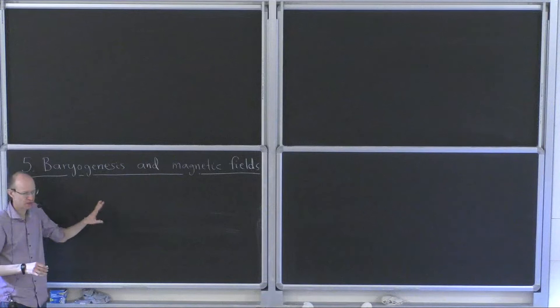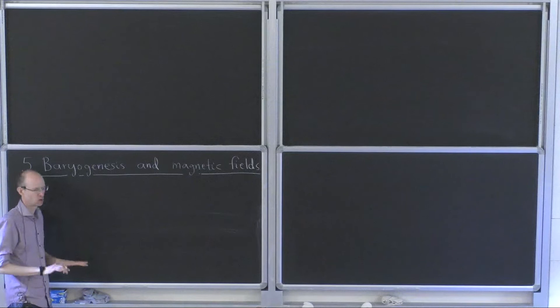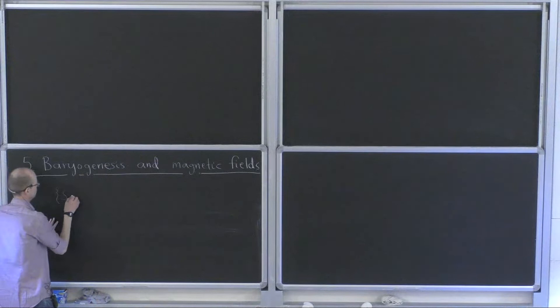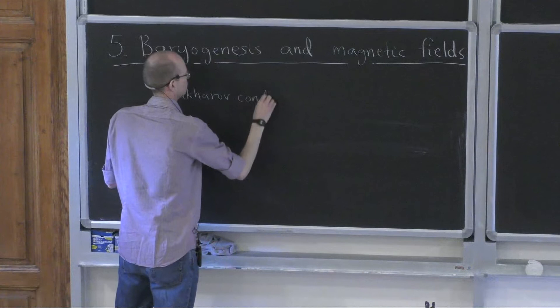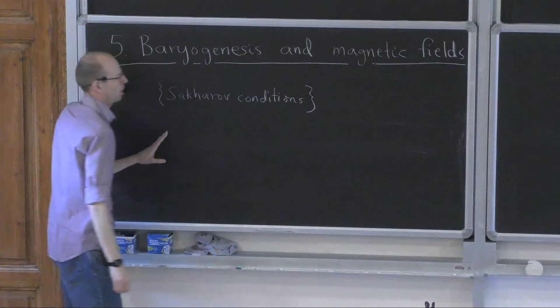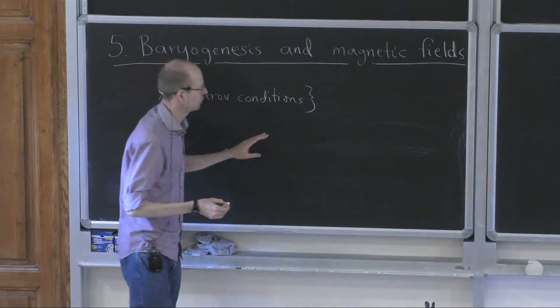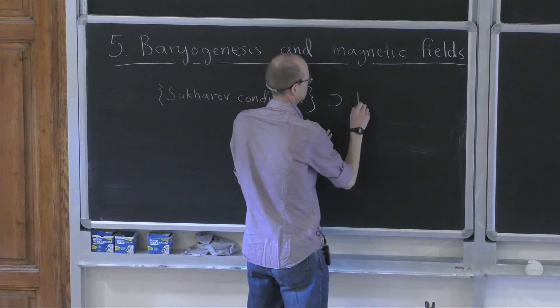First I go through some standard stuff, some main points, and then I can slow down and do something in a bit more detail. Any discussion of baryogenesis usually starts with the Sakharov conditions. I will not even list all of them and discuss whether and why they are satisfied — probably most of you have heard this many times. We will focus on one of them, which is the baryon number violation.